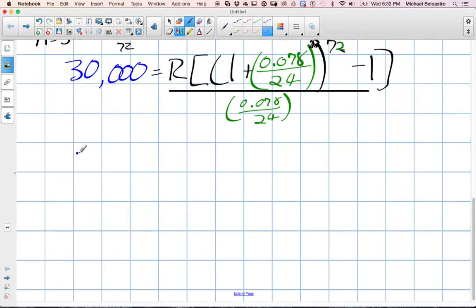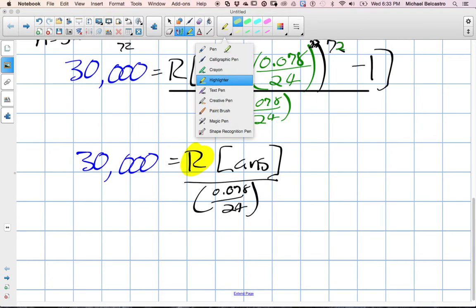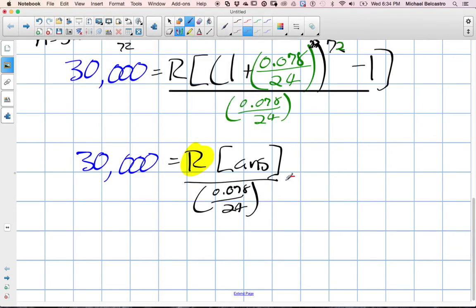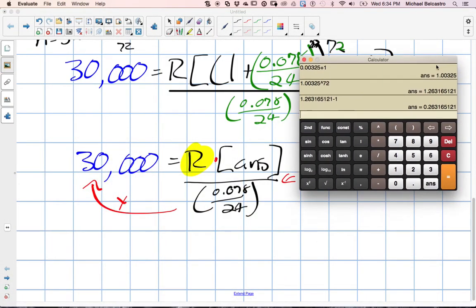Maybe I'm going to rewrite it again here. We have 30,000 is equal to R times, I'm going to just call it our answer in the calculator. Instead of writing it all down, divided by 0.078 over 24. Now, algebraically, we need to get R by itself. So what I want to do is, because this is division here, I want to move this to this side and multiply. Once we do that, we're then going to divide by the answer because it's R times that answer. So we'll do this in a step. We didn't do everything in the calculator, but luckily the calculator memorizes the numbers.